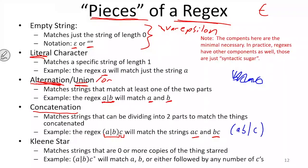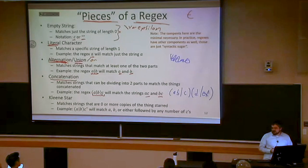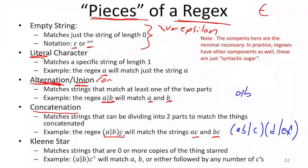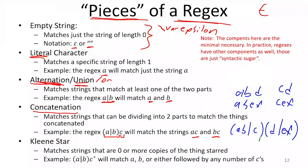How many strings does this regular expression match? There are four strings. They are: ABD, ABEF, CD, and CEF. For example, ABD can be split — AB matches the first part (either 'AB' or 'C'), and D matches the second part (either 'EF' or 'D').